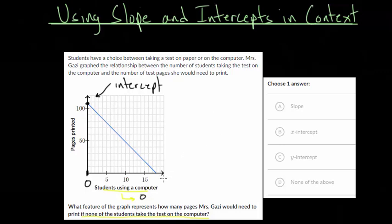And remember, this is our x axis, and this is our y axis. So since this is crossing our y axis, this is our y intercept right here. So that would be our answer. So let's try another one now.